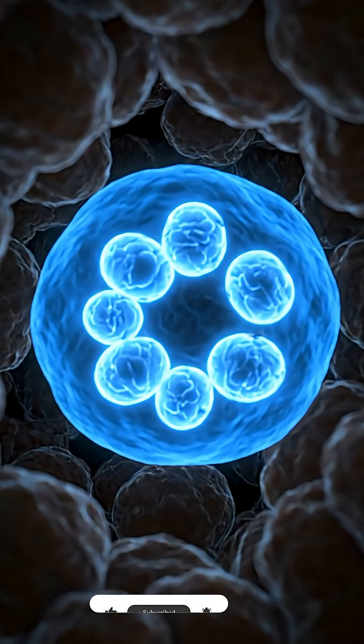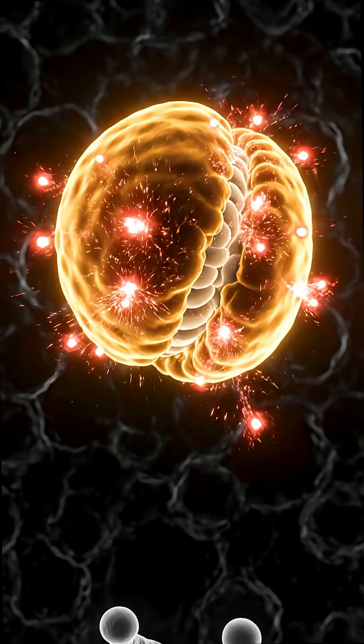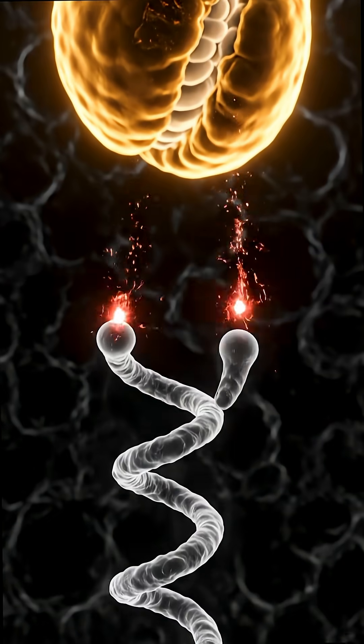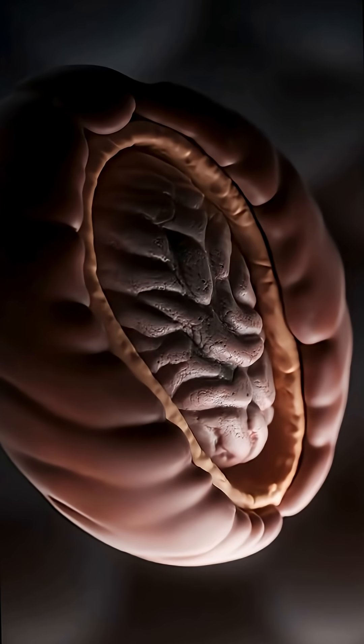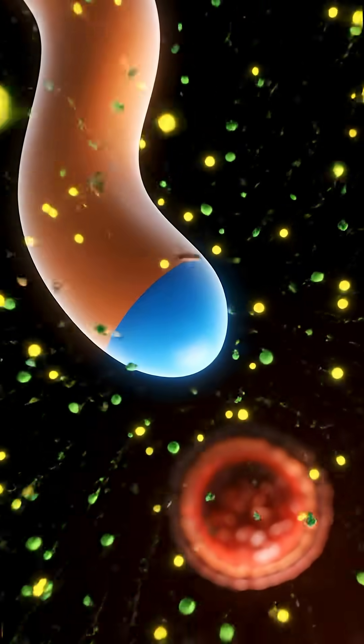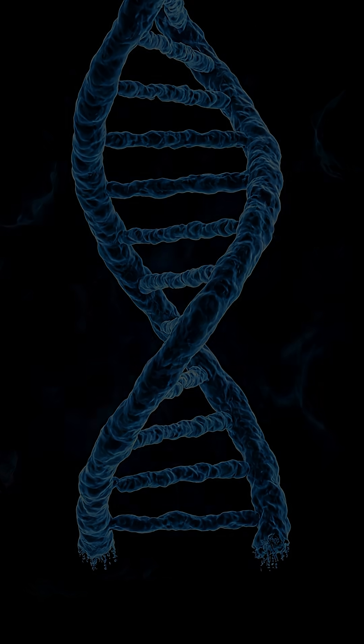A new study from the University of Pittsburgh uncovered the culprit. Stressed mitochondria release reactive oxygen species, ROS, which damage telomeres, the protective caps of chromosomes, draining the T cells of their power.